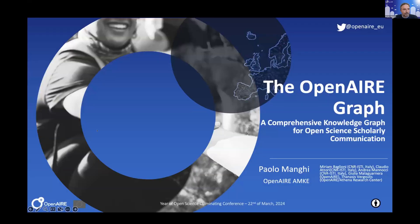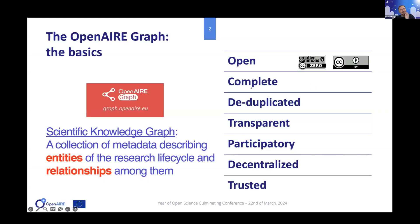What I'm presenting today is the OpenAIRE Graph, one of the scientific knowledge graphs made available today. To introduce the concept: a scientific knowledge graph is essentially a metadata collection built by aggregating data from trusted data sources in the scholarly communication domain — repositories, publisher websites, and in the case of the OpenAIRE Graph, this extends to data repositories, software repositories, and so on.